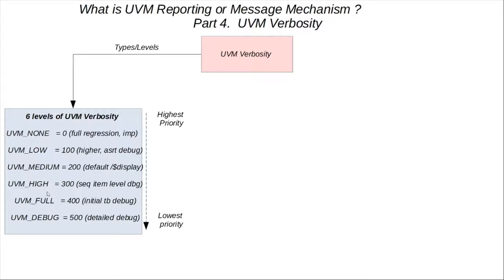UVM High and UVM Full have values of 300 and 400 respectively, and can be used for early testing to make sure the testbench and its implementation are working correctly. UVM High could be used for something like sequence item level details, for instance. UVM Full could be used for all kinds of initial testbench-related debug just to make sure the testbench environment is behaving as expected, like when you've recently written some tests and created the testbench.